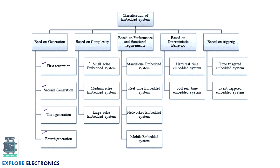With respect to complexity, we named them as small scale, medium scale, and large scale. Similarly, depending on performance and functional requirements, we have standalone, real-time, networked, or mobile. Based on deterministic behavior, we have hard real-time and soft real-time. And based on triggering, we have time-triggered or event-triggered embedded systems.